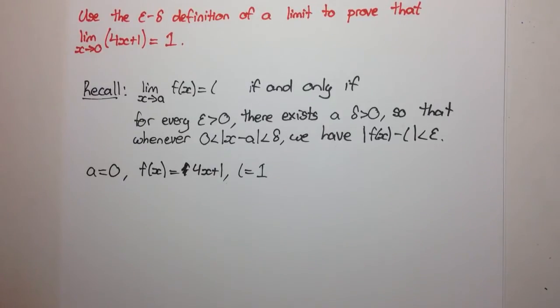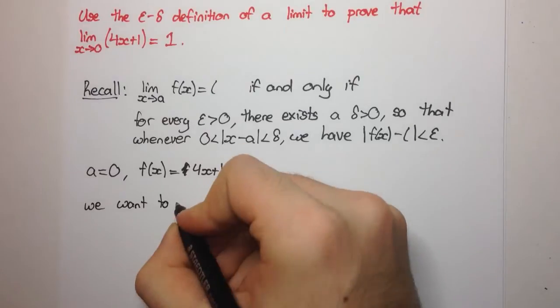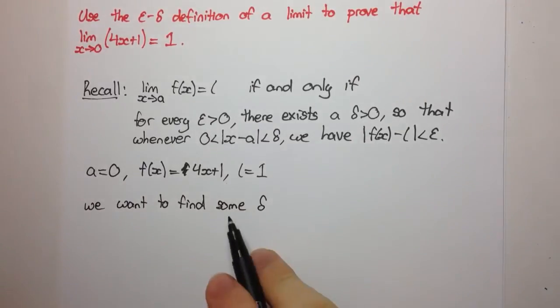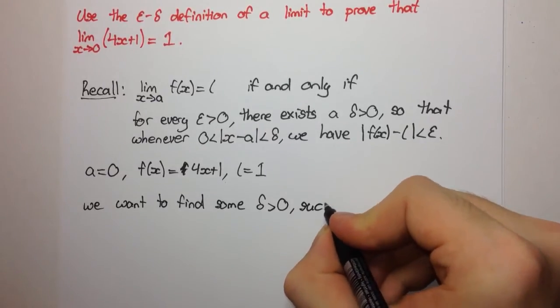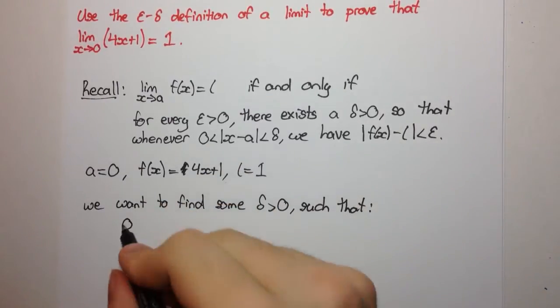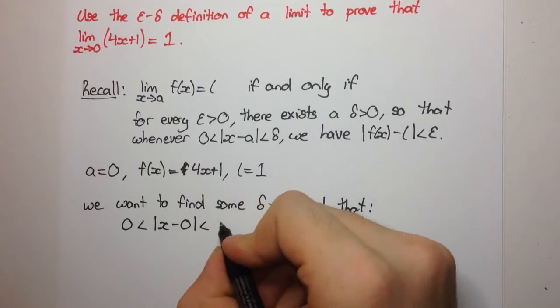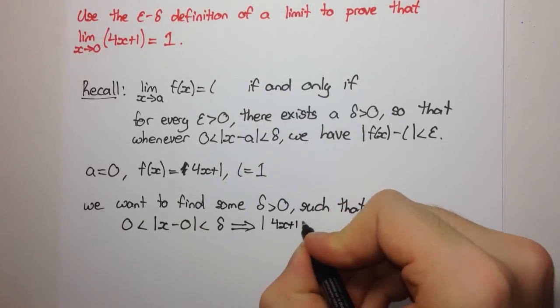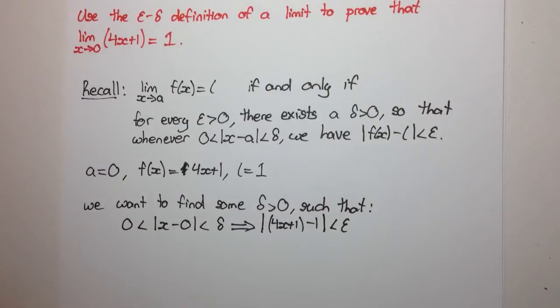Now summing these into here, what we want to find is some delta. We just need to show that there is a value of delta greater than 0 such that 0 is less than x minus 0, which is pretty much just x, so the absolute value of x less than delta will imply that the absolute value of 4x plus 1 minus 1 is less than epsilon. Okay so that's what we're looking for.